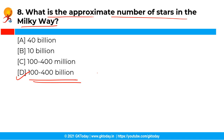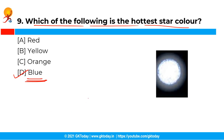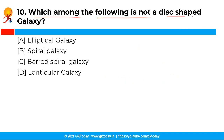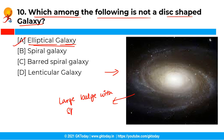The next question: which of the following is the hottest star color? The correct answer is Option D, i.e. blue. The color of the star reflects its temperature. Since the wavelength of blue is minimum, its temperature is maximum. This is according to Wien's displacement law. The next question: which among the following is not a disc-shaped galaxy? The correct answer is Option A, i.e. elliptical galaxy. A disc-shaped galaxy has a large bulge in the center with spiral arms traveling around, and an elliptical galaxy is not a disc-shaped galaxy. Thank you so much. This was all for today's video — stay tuned for more upcoming videos.